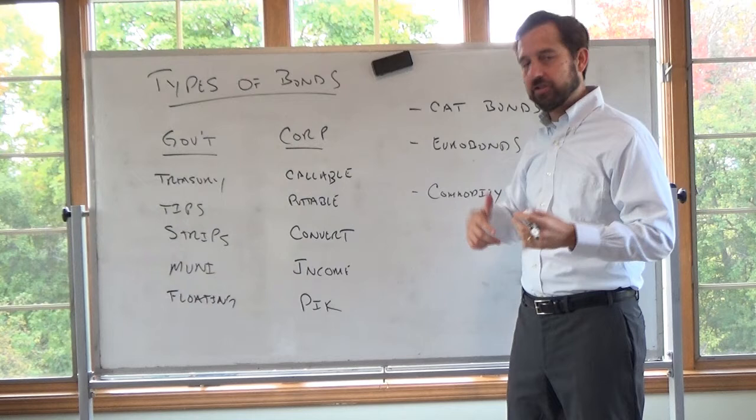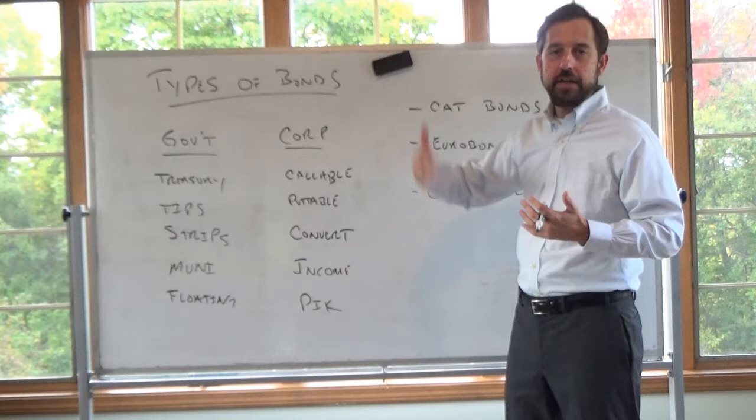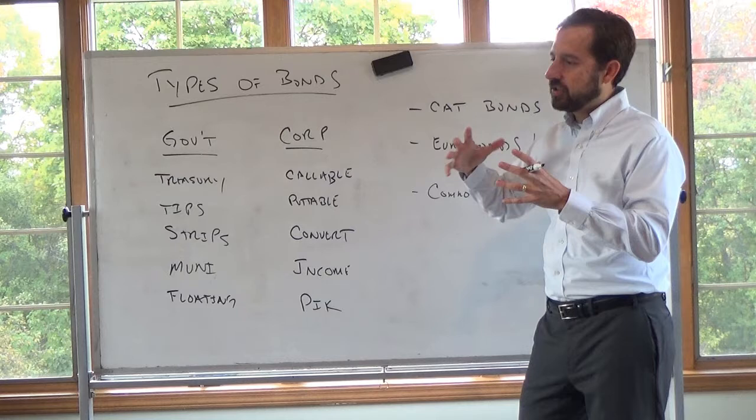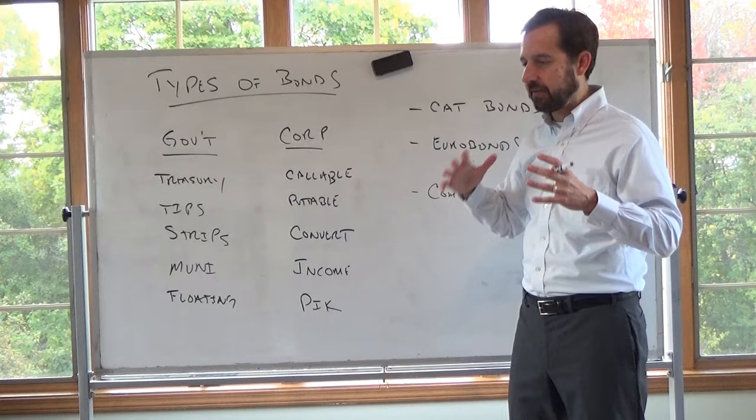And the reason being is I want you to see, remember we define bonds as just a promise. They're a promise to repay according to some structure. You can write whatever you want into that promise, into that structure. So I want to talk a little bit about the different types of promises we can make to repay.